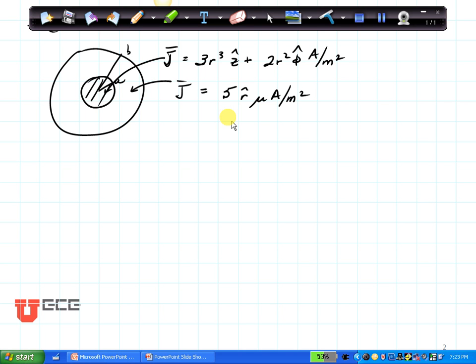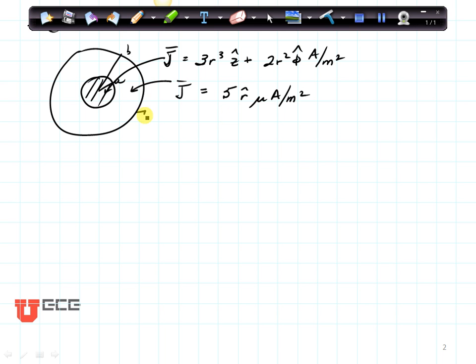The problem is a coaxial cable has a solid center conductor with a radius a and a grounded outer shield with radius b.